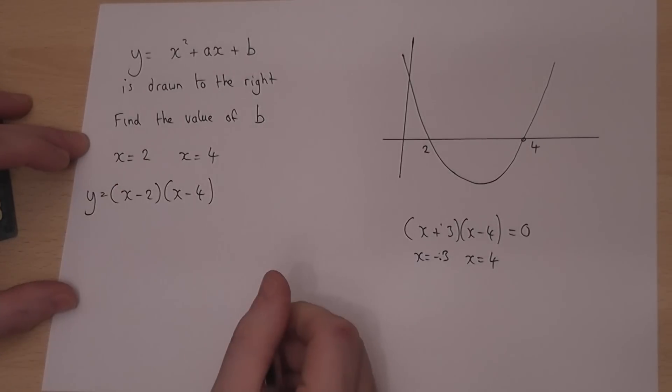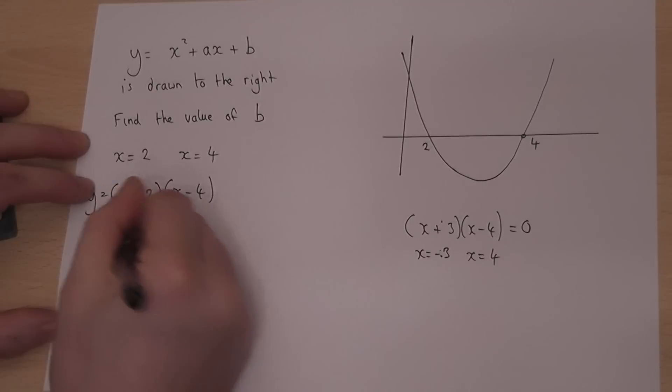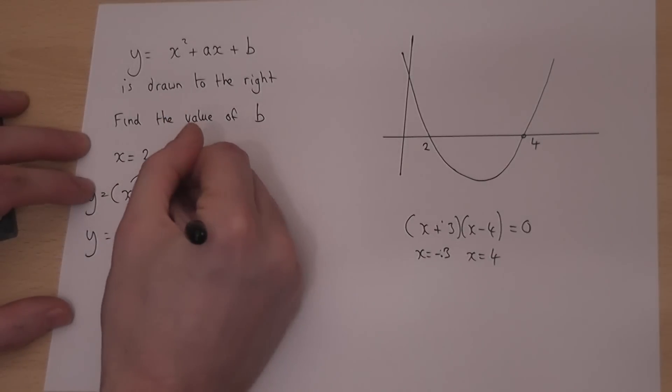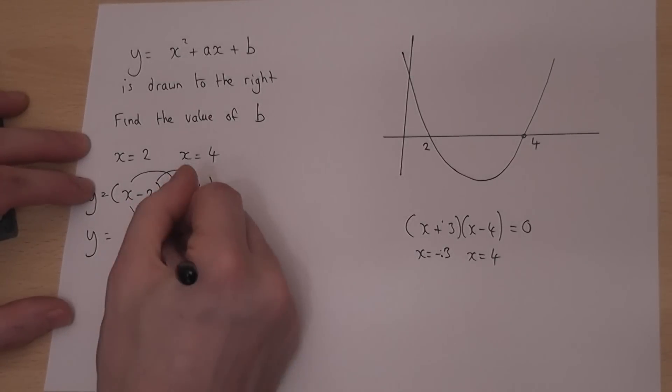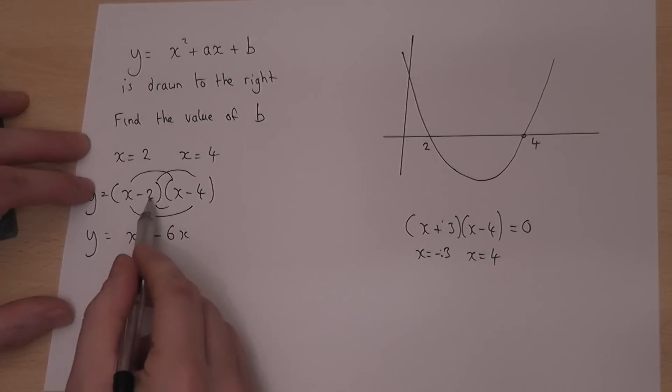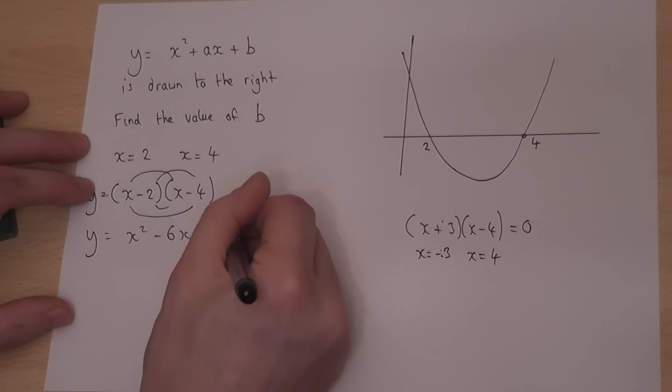So y equals x minus 2 and x minus 4. I could therefore expand this using a typical smiley face or whatever you use. I get an x-squared minus 2x minus 4x is minus 6x and minus 2 times minus 4 is plus 8.